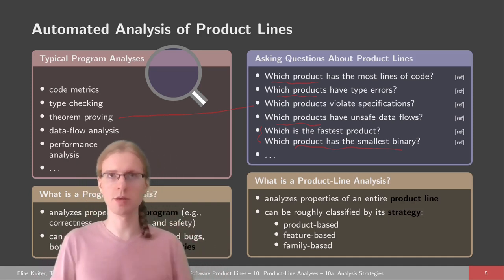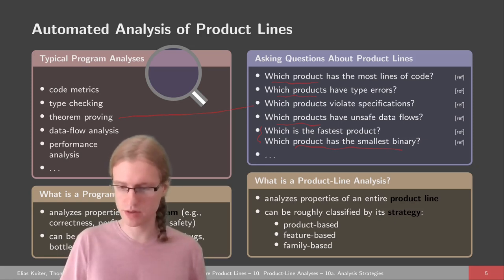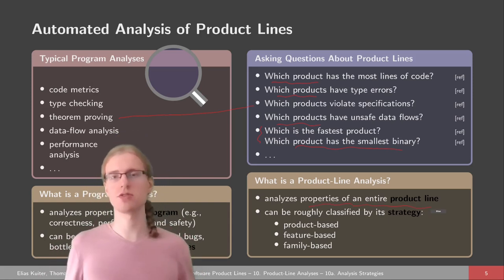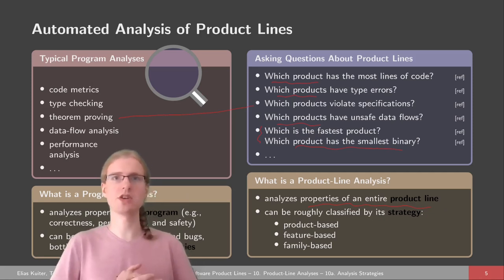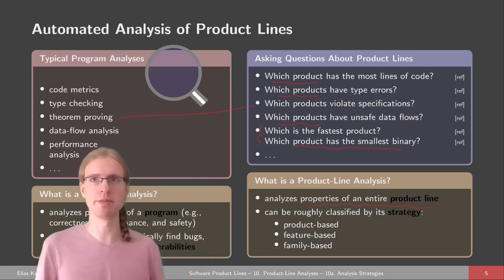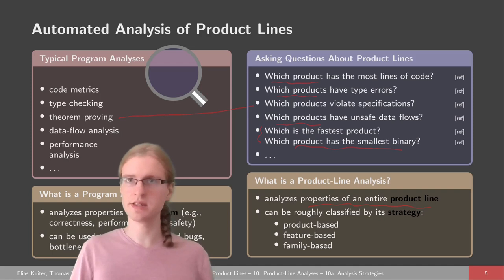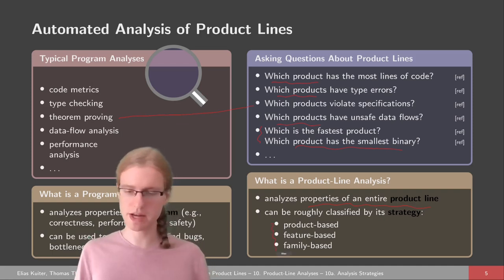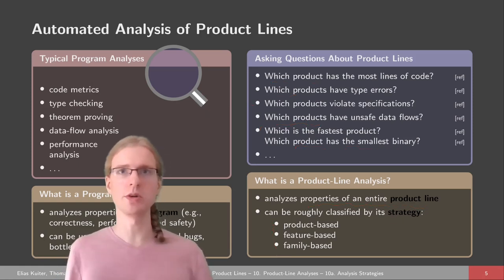The common feature of these analyses is that we usually want to analyze properties of an entire product line at once — basically analyze all the products. Now we are going to look at different strategies for implementing such a product line analysis. Most product line analyses can be grouped into one of three groups: product-based, feature-based, or family-based, or some combination thereof.